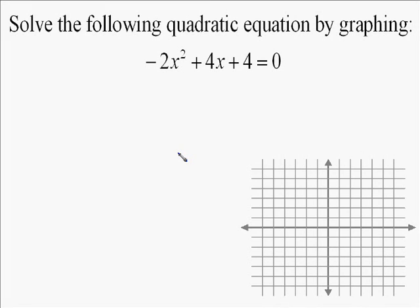The following problem describes how to solve a quadratic equation by graphing. When we're solving by graphing, what we're looking at is we've got this quadratic expression, negative 2x squared plus 4x plus 4, and that equals 0. What we do is we write y instead of writing 0. And then what we're going to try to determine is, well, when is y going to equal 0?